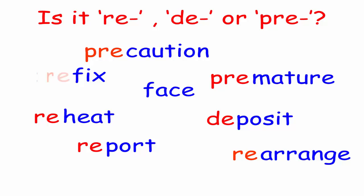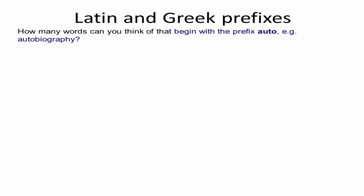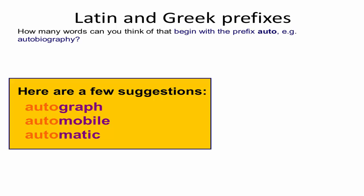Prefix, finally deface. How many words can you think of that begin with the prefix auto? For example, autobiography, which means a biography written by a person about his own life. You're right, autograph, automobile, automatic. What do you think auto means? Perfect, auto means self, to be done by itself.